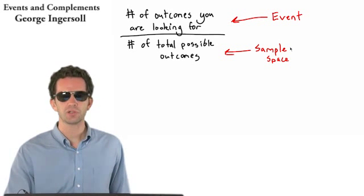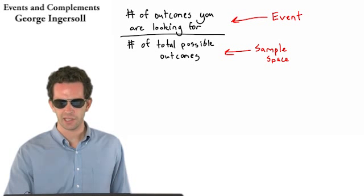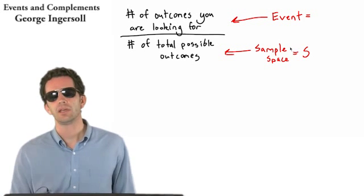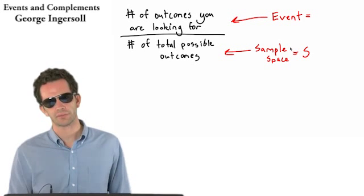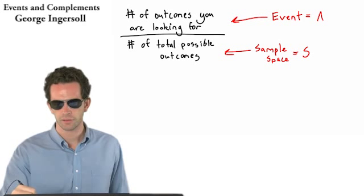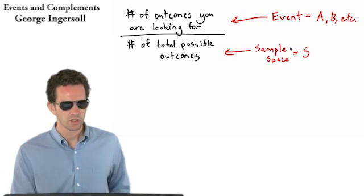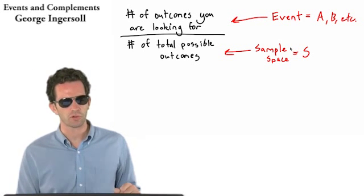The sample space is usually denoted by an S, and an event is denoted by some other letter. So it might be A, B, something along those lines. So number of outcomes you're looking for over total possible outcomes. We can sort of demonstrate this graphically.